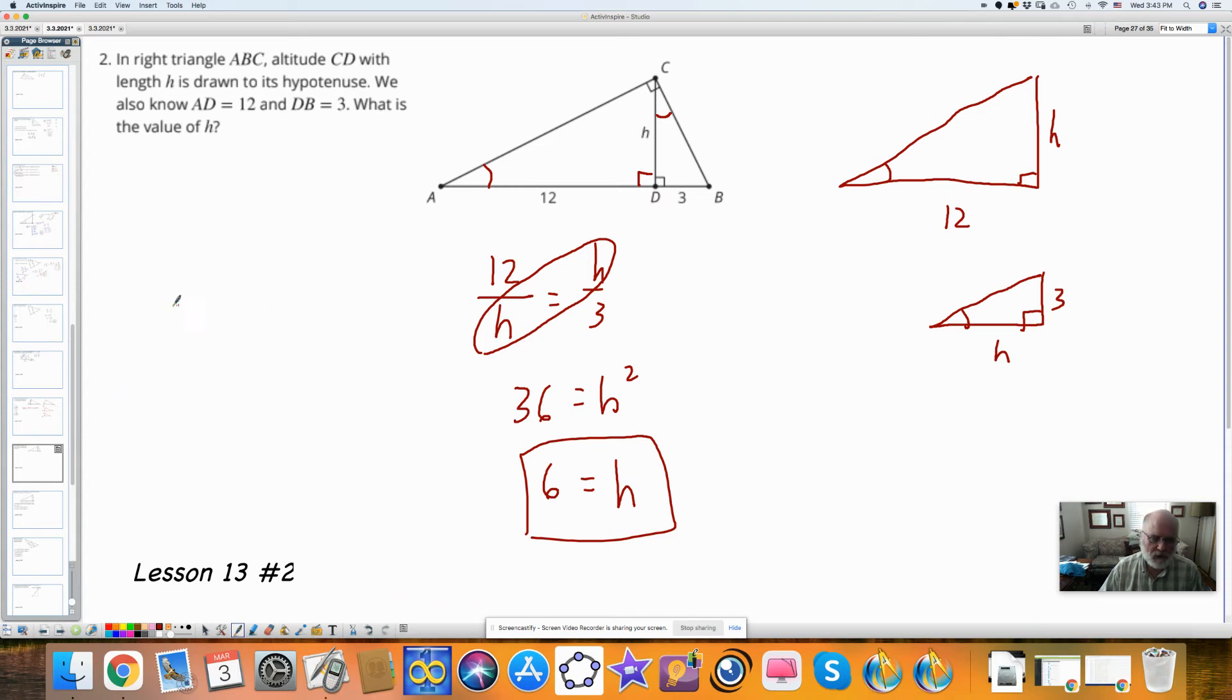I could have also looked at this as the Mickey Mouse theorem. Remember, when we have three geometric means, this is to this as this is to this. So I could have said right off the bat, 12 is to H as H is to 3.